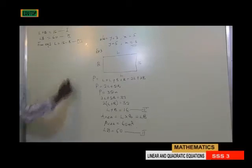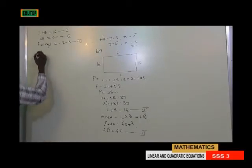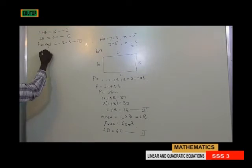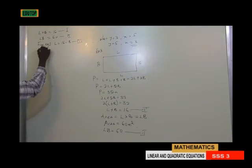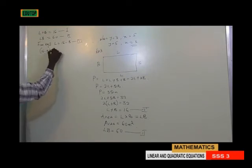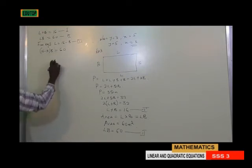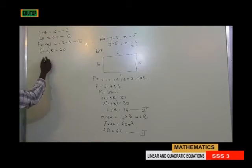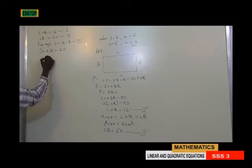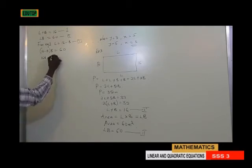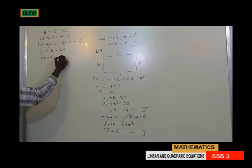Anywhere I see my h (help), I will replace it with 16 minus b. So here I have 16 minus b into b, which is affected by b equals to 16. I open and expand this, and I have 16b minus b squared equals to 16.